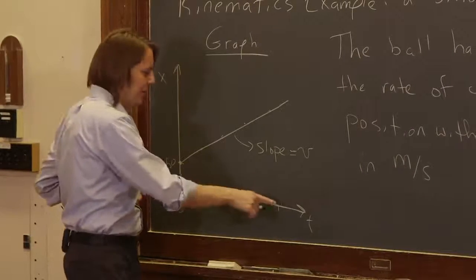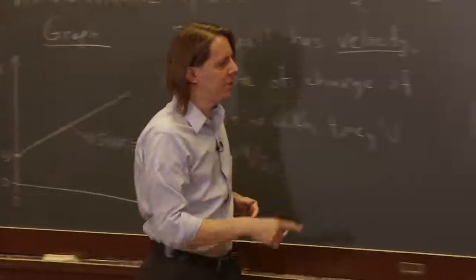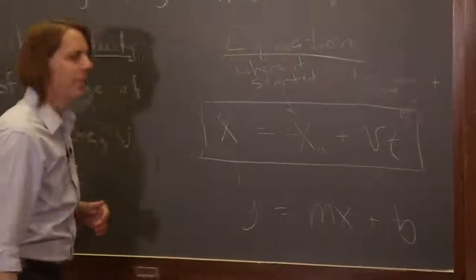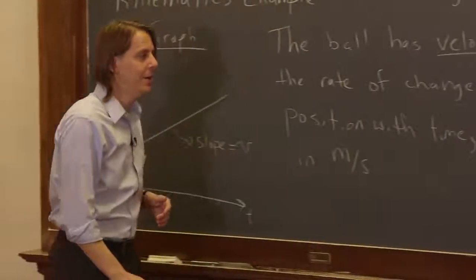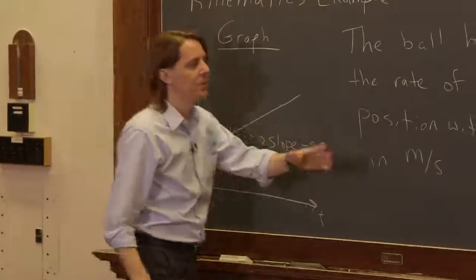And then when you did in algebra class, y is a function of x, this axis was x. Now this axis is time. Right, this is the independent variable. So time is down here. So when you used to write x there, you're actually writing it as time now there.